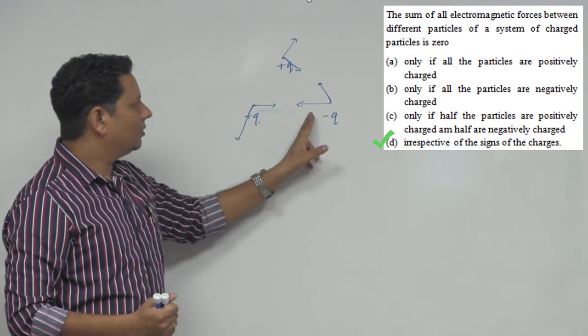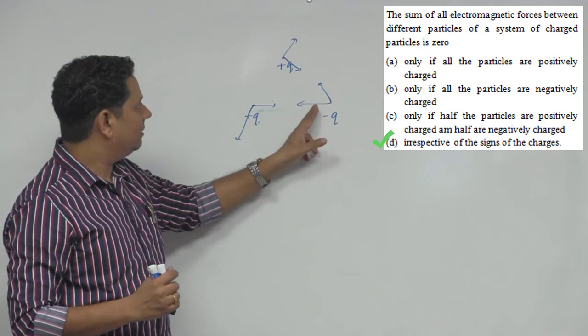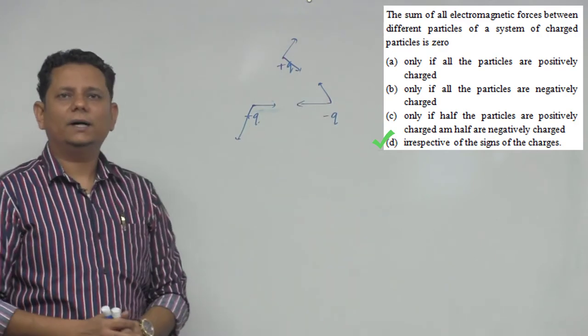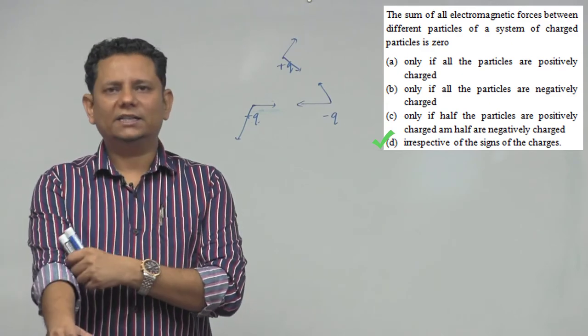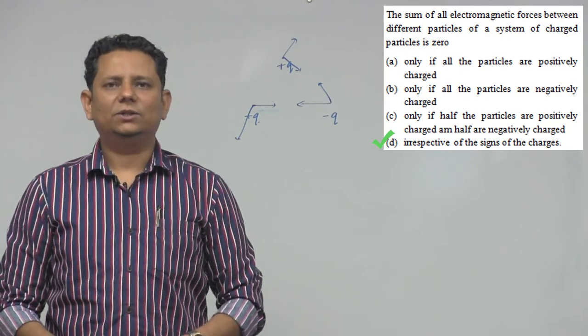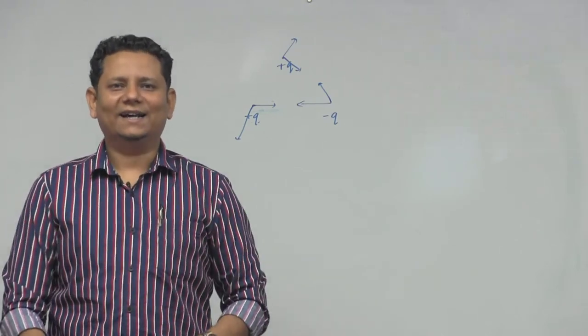So these two canceling, the sign is I-J-K, similarly the net force is irrespective of the charge of the sign. It is irrespective, the net sum is zero, so option number D is the right answer.